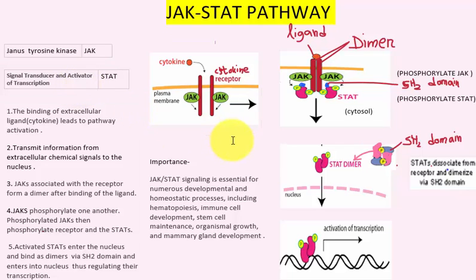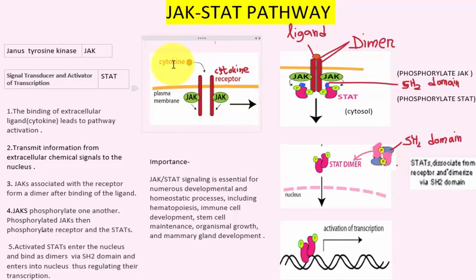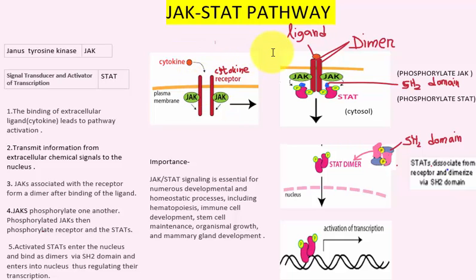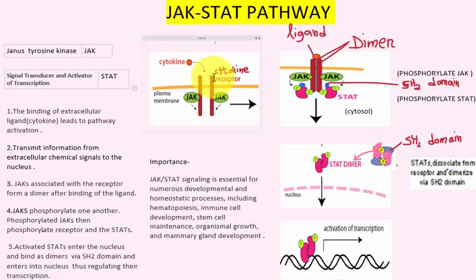Let's discuss the mechanism. The cytokine is the ligand. This is the cytokine receptor and this is the plasma membrane. When the cytokine binds with the receptor, the monomers form a dimer. Remember, for signal transduction, a dimer is required — monomers cannot transduce the signal. So cytokine binding to the receptor leads to pathway activation.